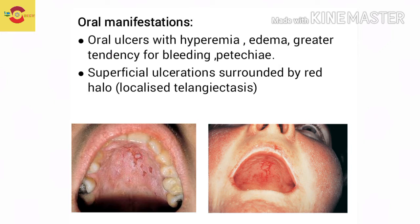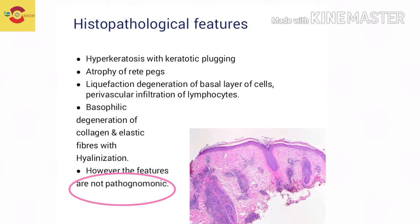Petechiae are also evident, and superficial ulcerations are surrounded by a red halo, which indicates localized telangiectasia. There are some histopathological features to note - these features are not pathognomonic of Systemic Lupus Erythematosus.